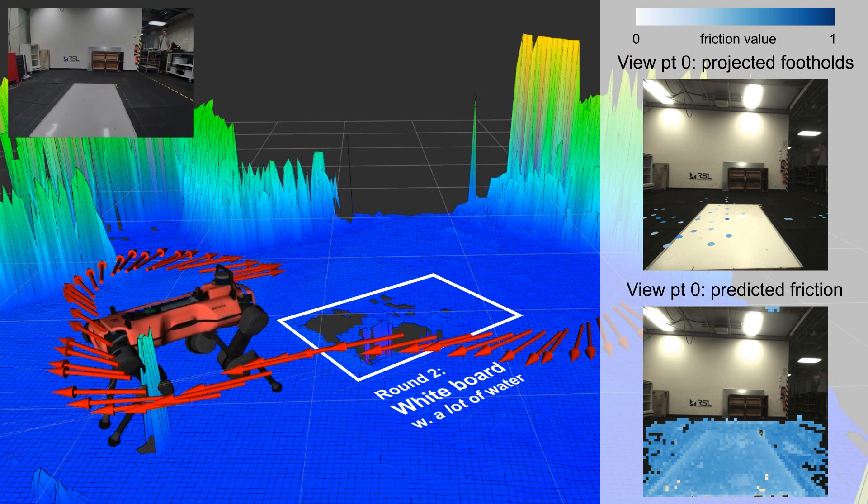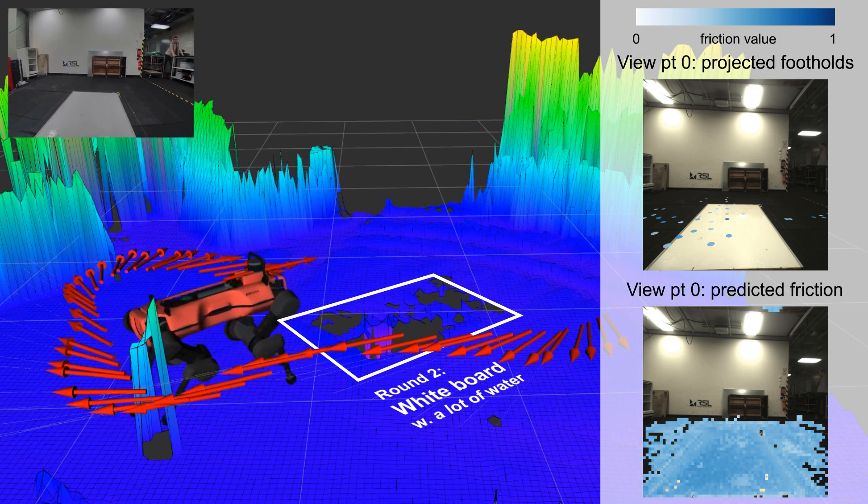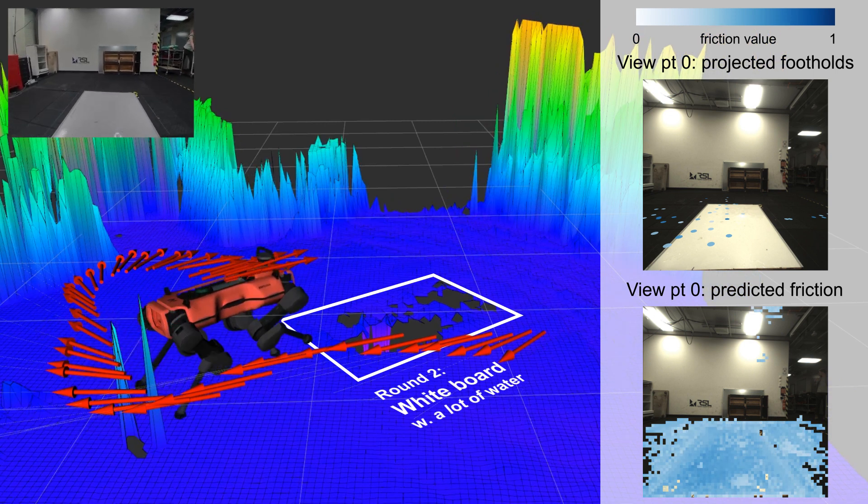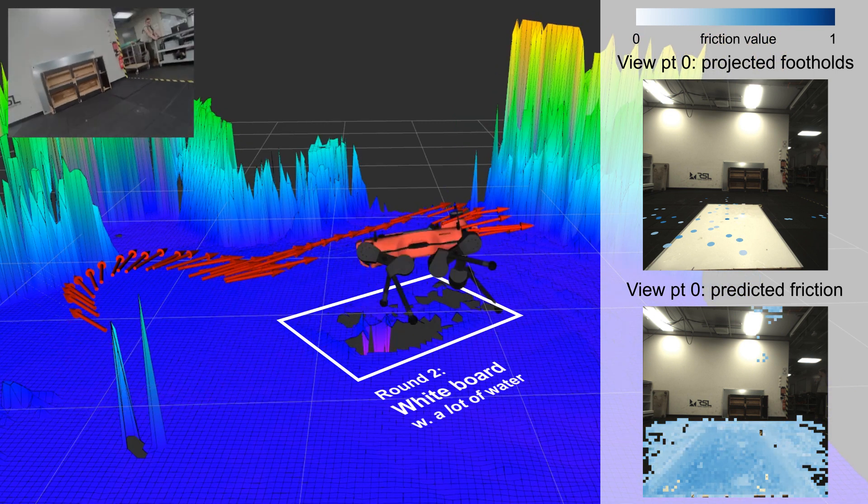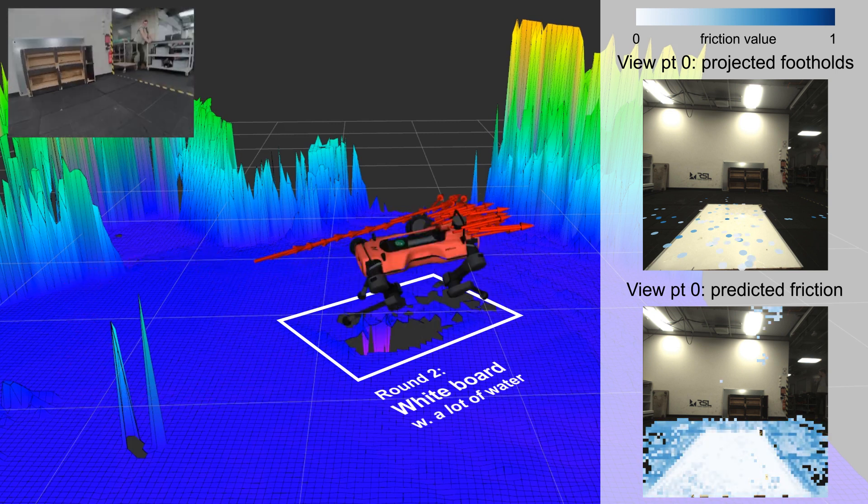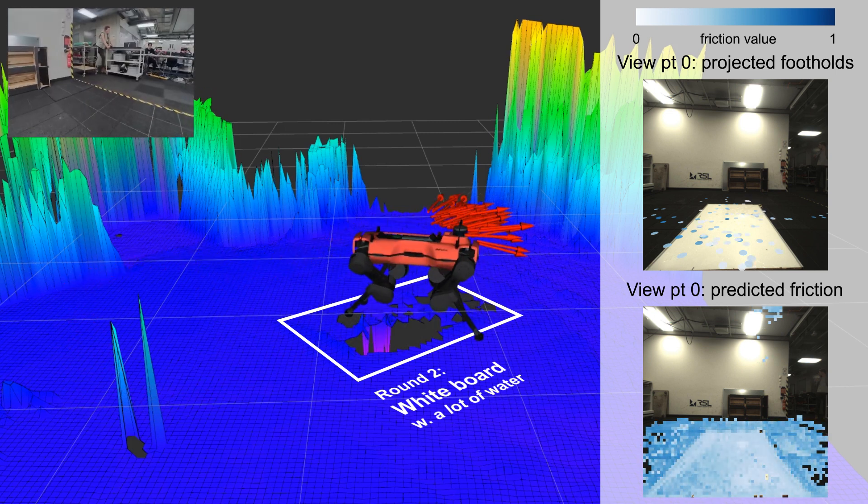In round two, we pour a lot of water on the white board, making it very slippery. After the large slips occur, our visual network adapts to the new situation and predicts the large friction difference between ground and white board correctly.